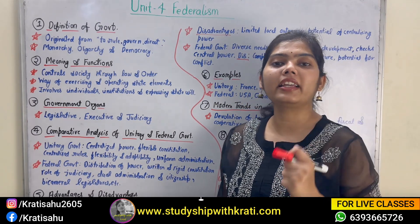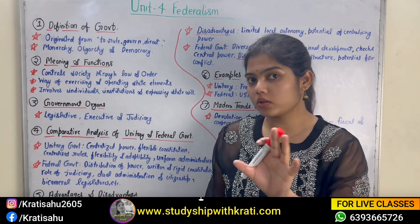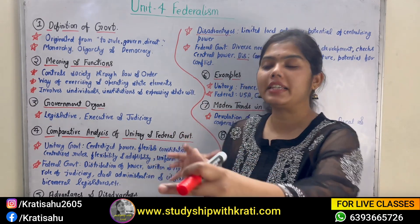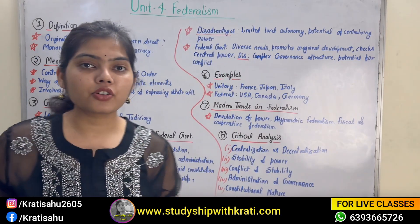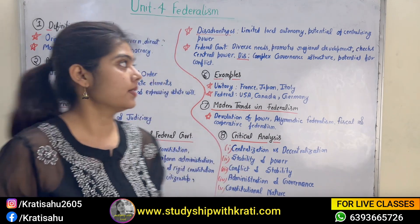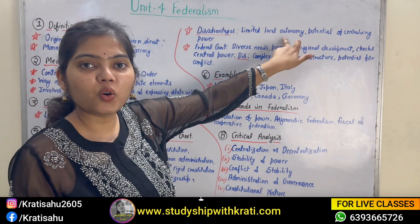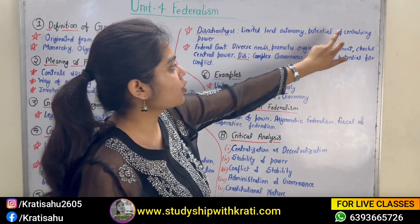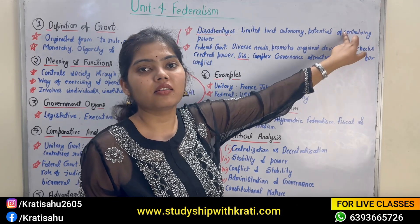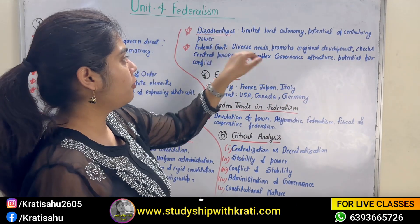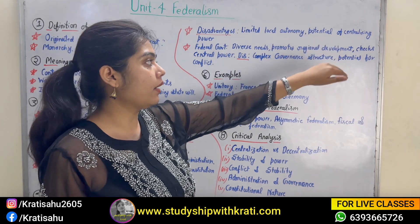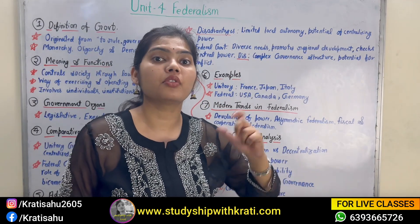Now what are the advantages and disadvantages? In unitary government, efficient decision making happens because power is in one hand — you don't need to consult many people, so decision making is fast. There is uniformity and strong central control, so in conflict situations it is easy to control the entire system. The disadvantage is limited local autonomy — local autonomy is not reflected at all — and there is potential for centralizing power, which during threat times can become very powerful and equally dangerous.